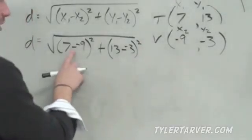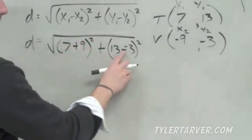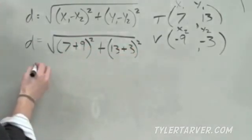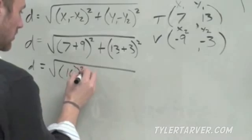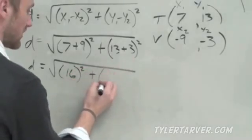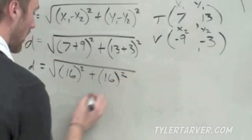First thing we're going to change, when you minus a negative, turns into a positive. Minus a negative, turns into a positive. Keep going. Square root sign. 7 plus 9, 16 squared, plus 13 plus 3, which is 16 squared.